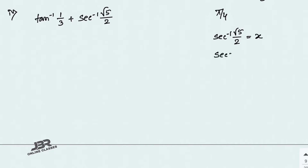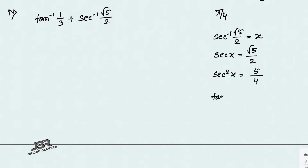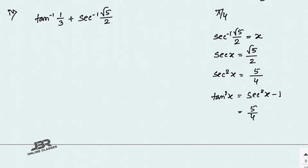Let sec⁻¹(√5/2) = x, so sec(x) = √5/2. Squaring: sec²(x) = 5/4. Using the identity tan²(x) = sec²(x) − 1, we get tan²(x) = 5/4 − 1 = 1/4.